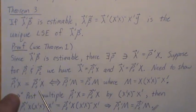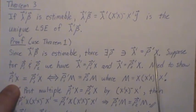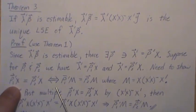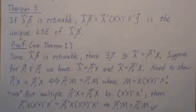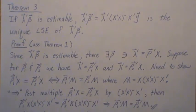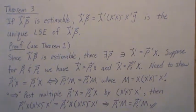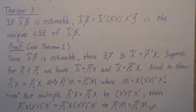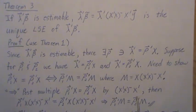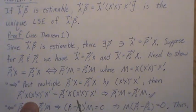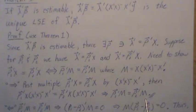We need to show that rho 1 prime X equals rho 2 prime X implies rho 1 M equals rho 2 M, where M is the perpendicular projection matrix onto the column space of X. To prove the forward direction, assume they are equal, then post-multiply both sides by the generalized inverse of X-transpose X, then X-transpose. We get rho 1 M equals rho 2 M, and the forward direction is proved.